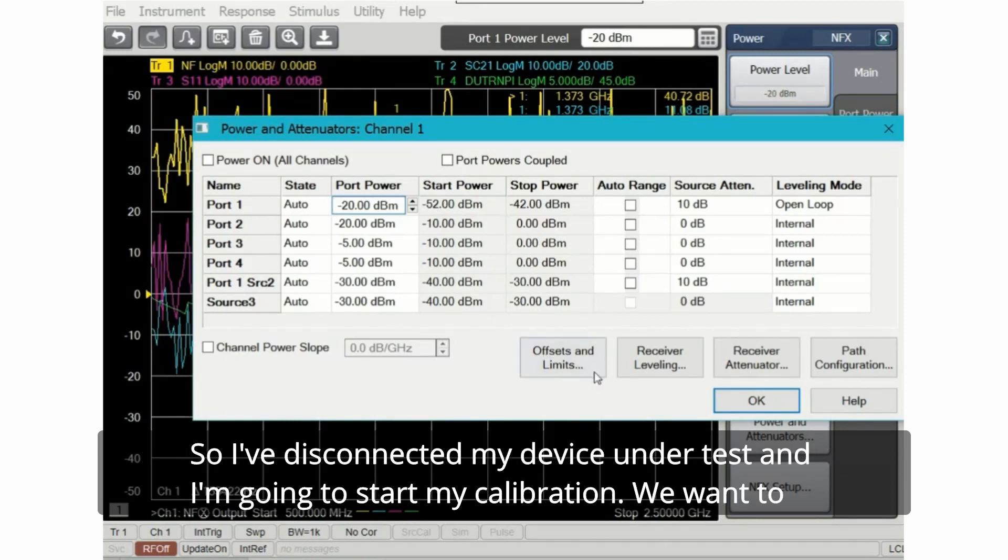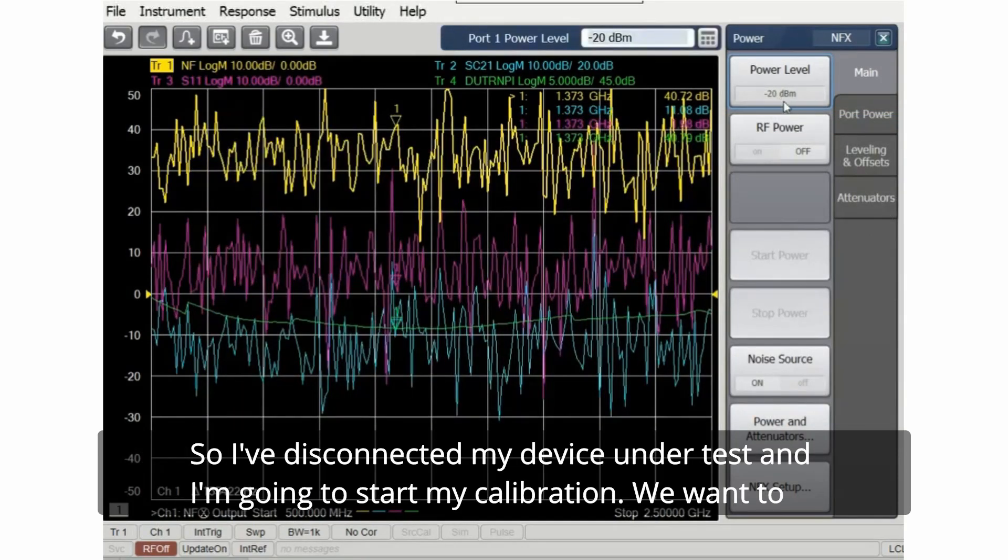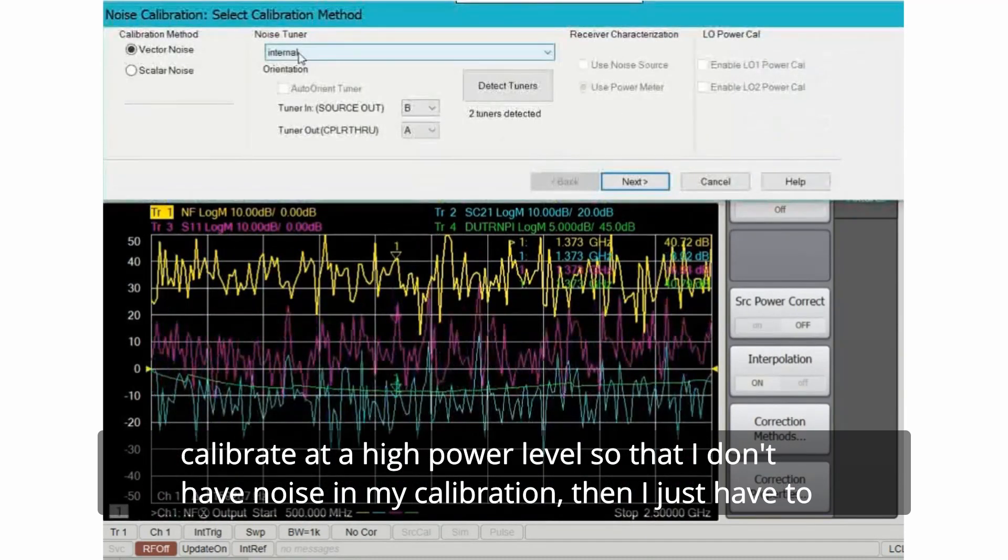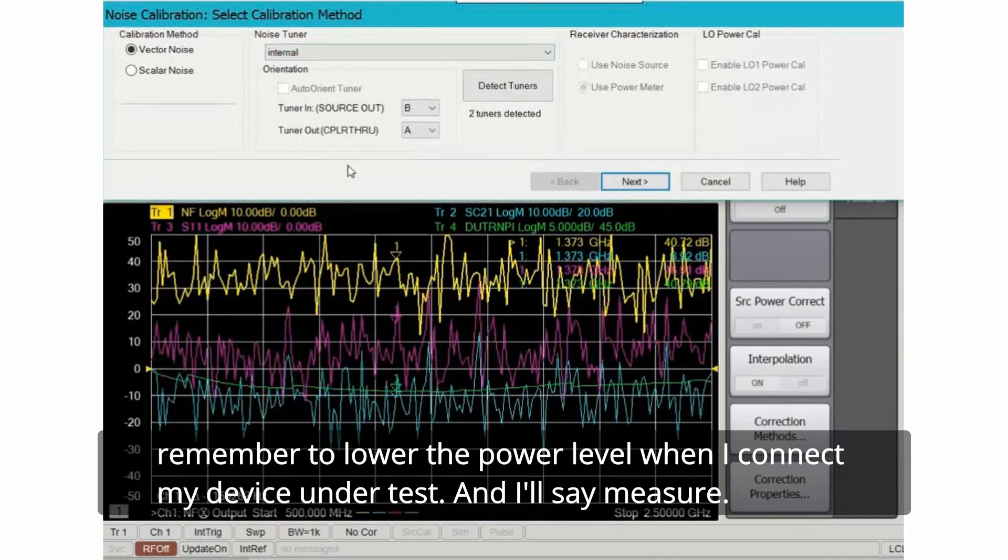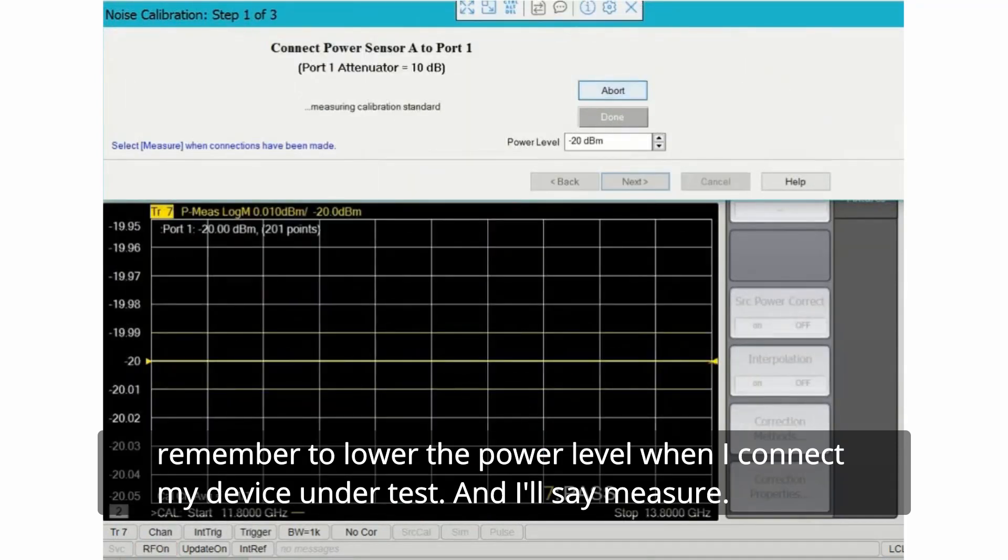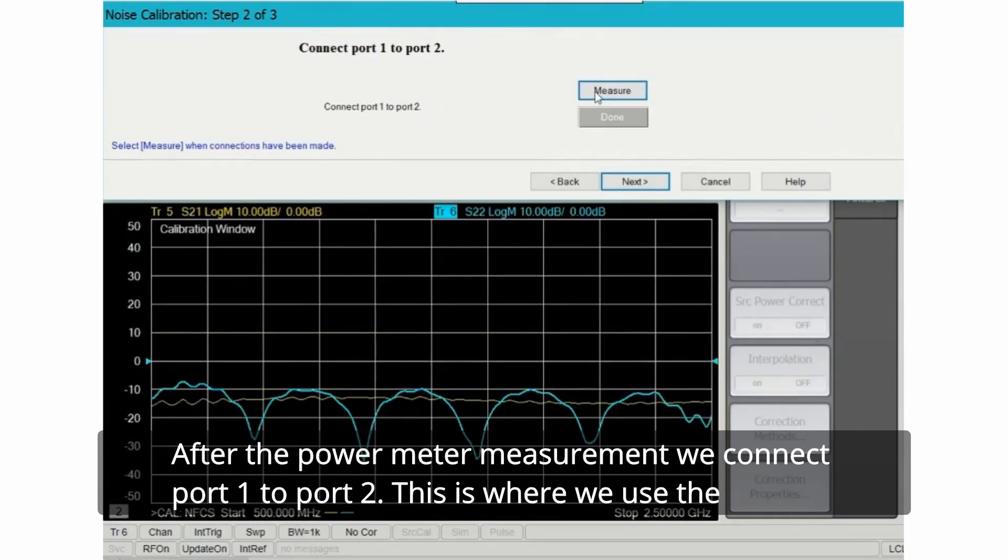So I've disconnected my device under test and I'm going to start my calibration. We want to calibrate at a high power level so that I don't have noise in my calibration. Then I just have to remember to lower the power level when I connect my device under test and I'll say measure.